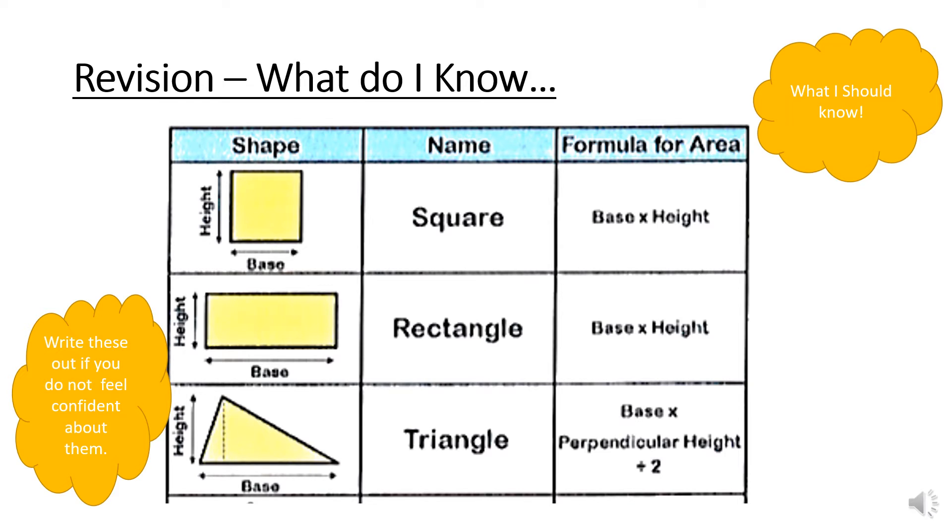To find the area of this, you do base times height. If you're looking at a rectangle, that's the one in the centre, height times by base. And that's the formula to find out the area. To find the area of a triangle, you find the perpendicular height, multiply that by the base. Remember, that is the height of a triangle.